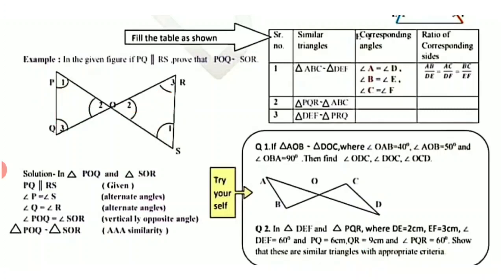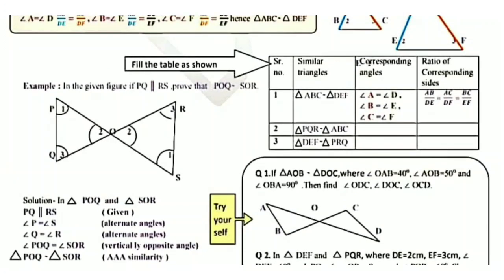Now we have a table with four columns: serial number, given similar triangles, corresponding angles, and ratio of corresponding sides. For serial number 1, triangle ABC is similar to triangle DEF. The corresponding angles are: angle A equals angle D, angle B equals angle E, angle C equals angle F. The ratio of corresponding sides is AB upon DE equals BC upon EF equals AC upon DF.